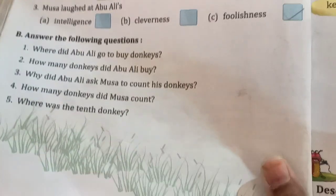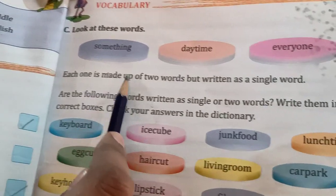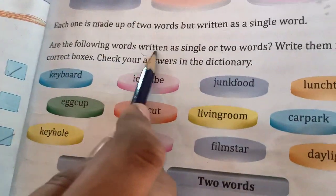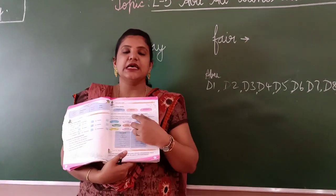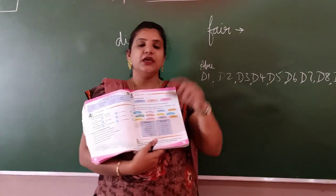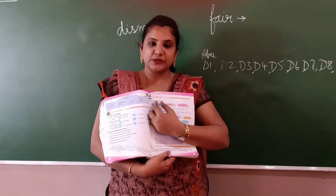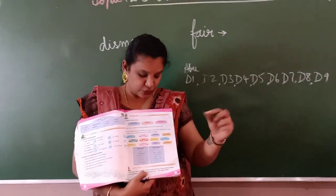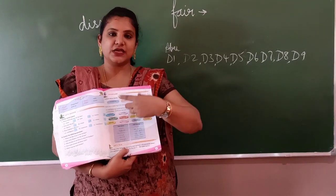This will go into your classwork. Now here is the vocabulary section. Look at these words: something, daytime, everyone. Each one is made up of two words but written as a single word. Some — thing. Day — time. Every — one. Some is a word, thing is a word, but they are written together as one. Same with daytime and everyone — they are two separate words attached as a single word.